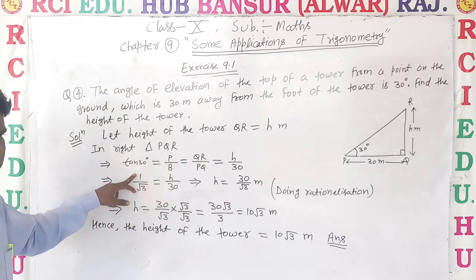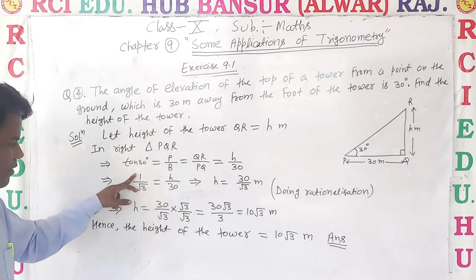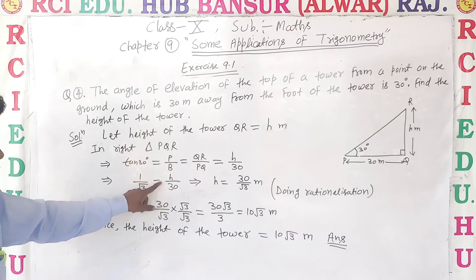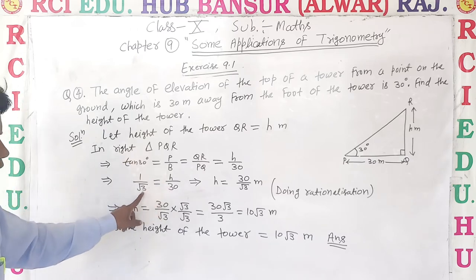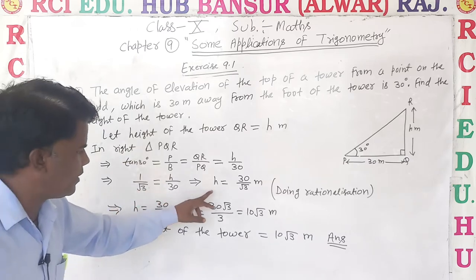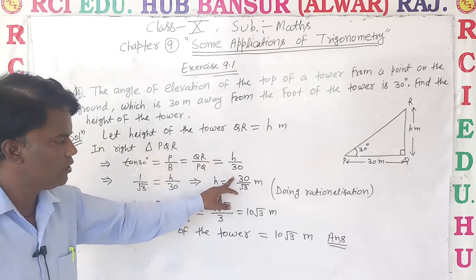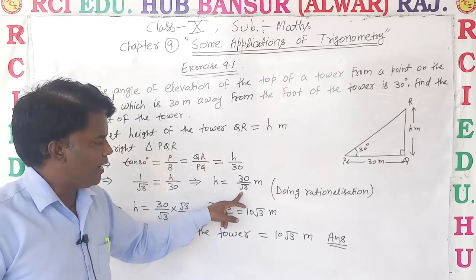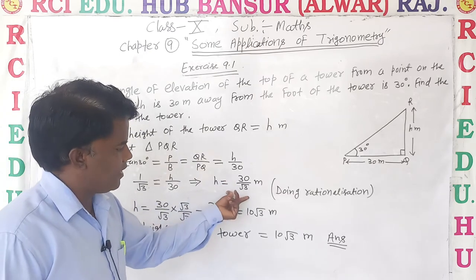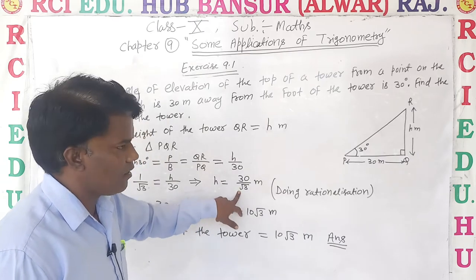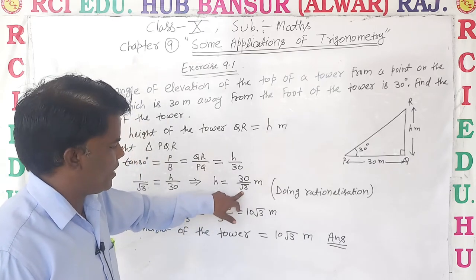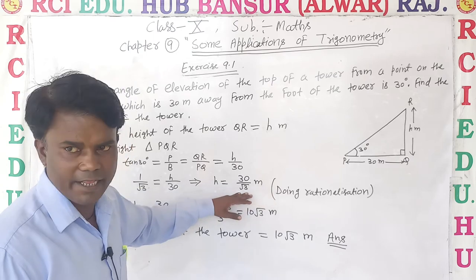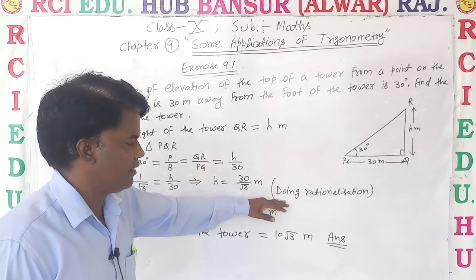Putting the value of tan 30 degrees: 1 upon root 3 is equal to h upon 30. After that, cross multiplication gives h equal to 30 upon root 3. But here, in the denominator we have a root value.